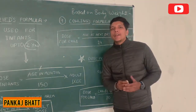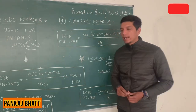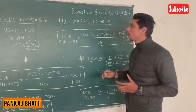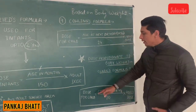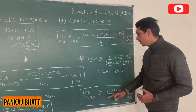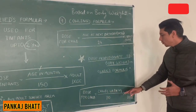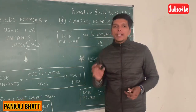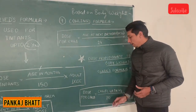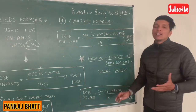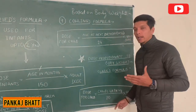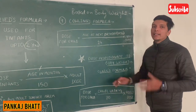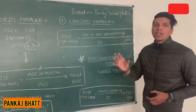The next formula is Clark's formula, another important formula used to calculate the dose. According to Clark's formula, dose for child equals child's weight in kg upon 70 into adult dose. The 70 means the average weight of a healthy person is 70 kg according to our system. Using this formula we can easily calculate the amount of dose required for a patient.